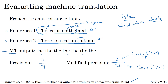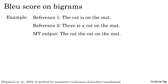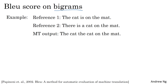So far we've been looking at words in isolation. In the BLEU score, you don't want to just look at isolated words — you also want to look at pairs of words. Let's define a portion of the BLEU score on bigrams, which means pairs of words appearing next to each other. We'll take unigrams or single words as well as bigrams, and maybe even longer sequences such as trigrams — three words appearing together.